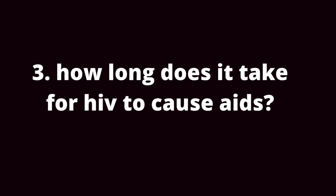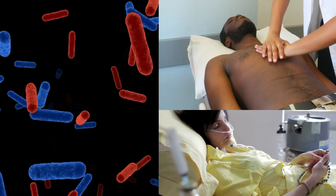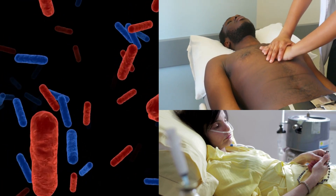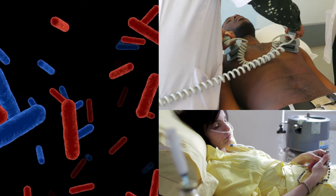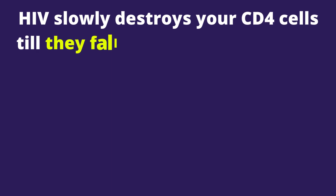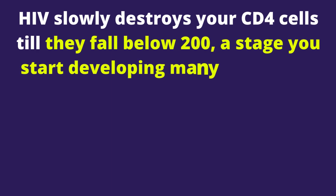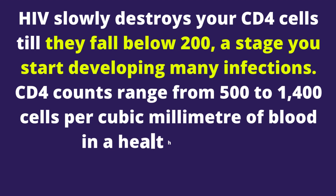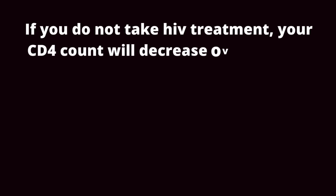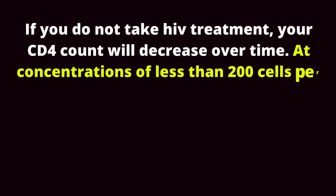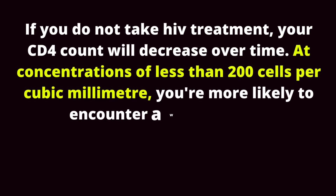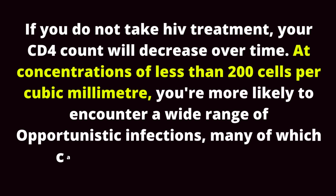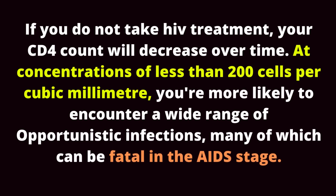How long does it take for HIV to cause AIDS? HIV is a virus that, if left untreated, destroys your immune system leading to AIDS. HIV slowly destroys your CD4 cells till they fall below 200, a stage where you start developing many infections. CD4 counts range from 500 to 1400 cells per cubic millimeter of blood in a healthy person. If you do not take HIV treatment, your CD4 count will decrease over time. At concentrations of less than 200 cells per cubic millimeter, you're more likely to encounter a wide range of opportunistic infections, many of which can be fatal in the AIDS stage.